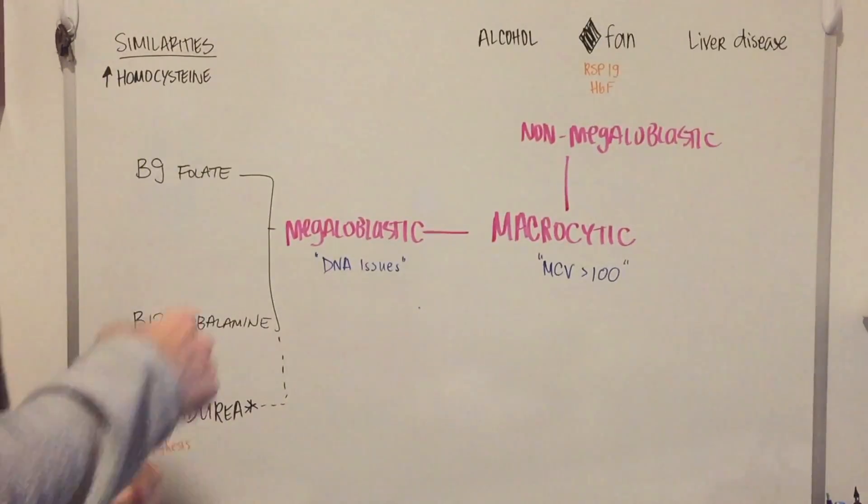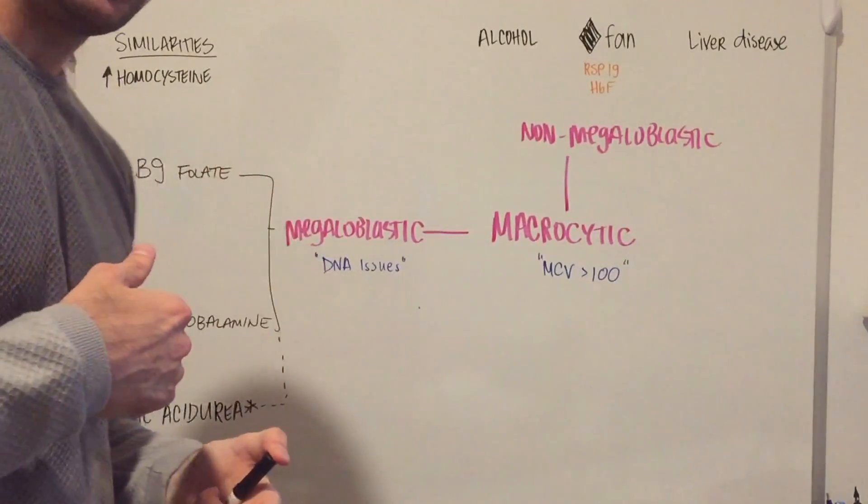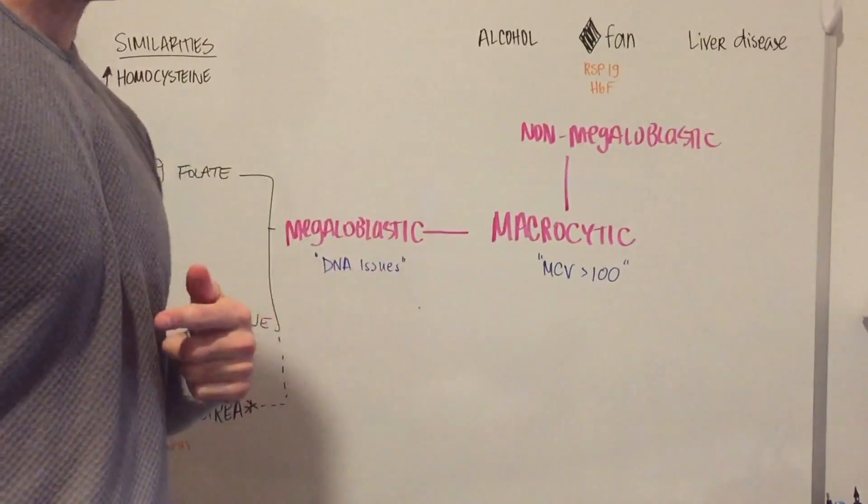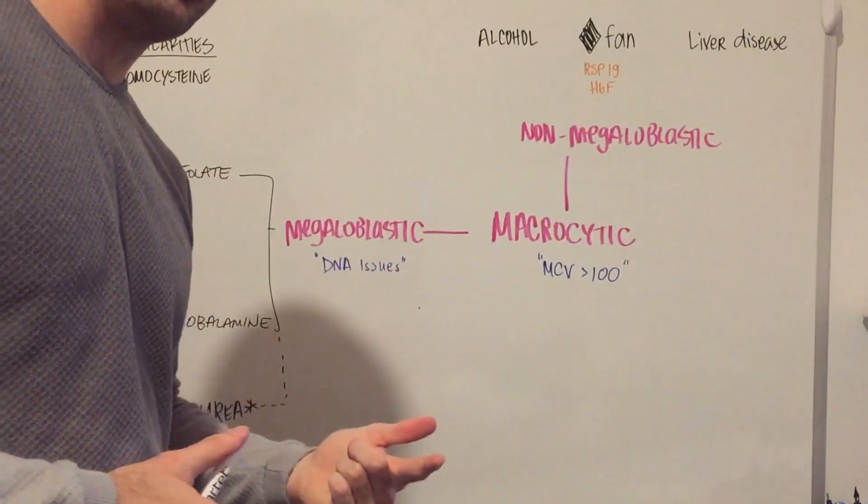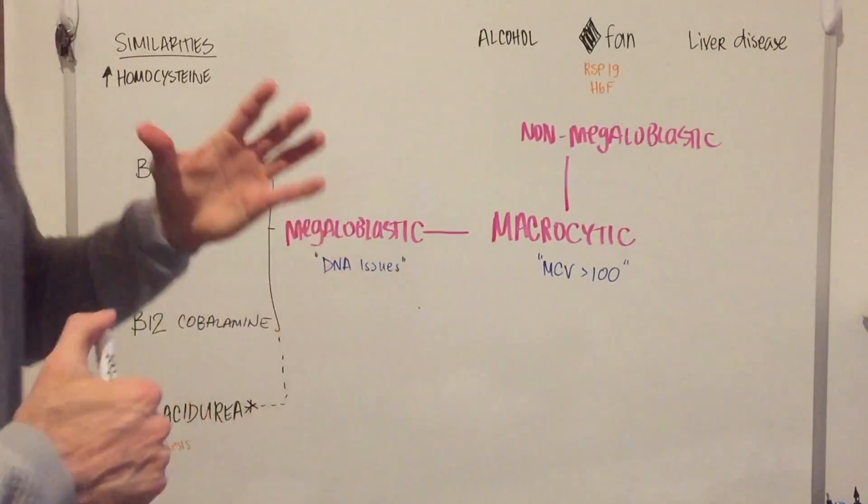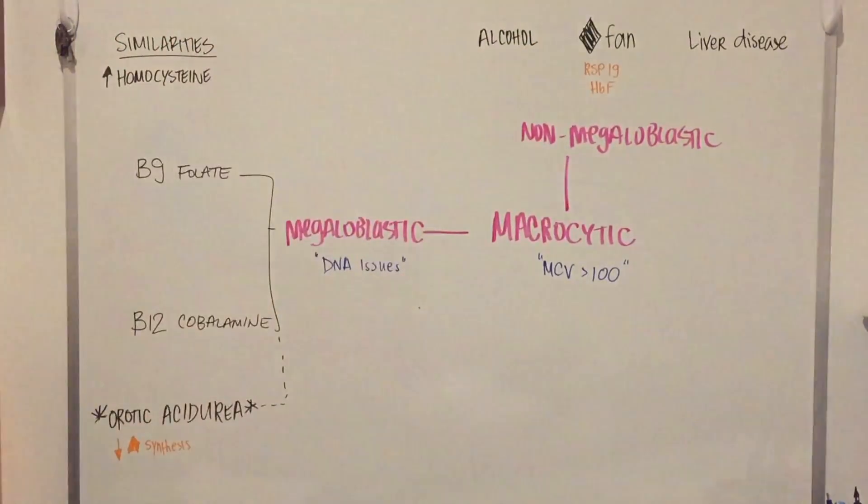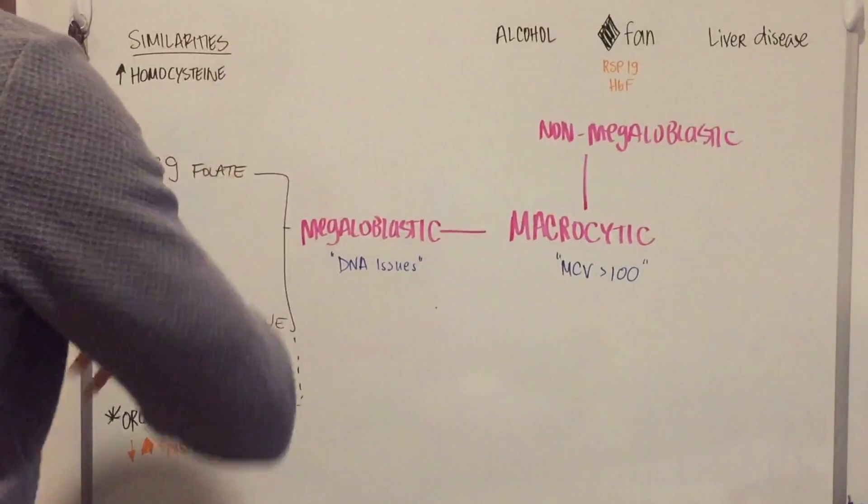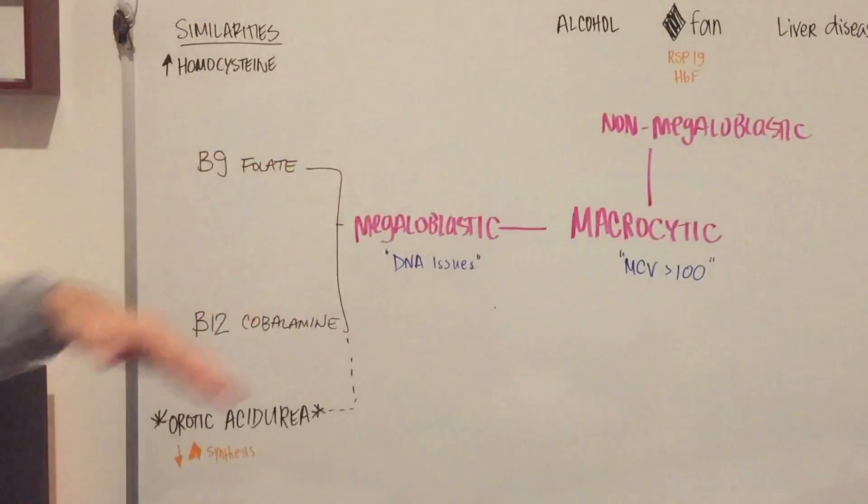You're going to get an increase in fetal hemoglobin. And as you may or may not know, if you increase fetal hemoglobin, you're going to get actually just a bigger red blood cell. But that's really all for non-megaloblastic. But now we're going to go into the main issues and talk about megaloblastic.